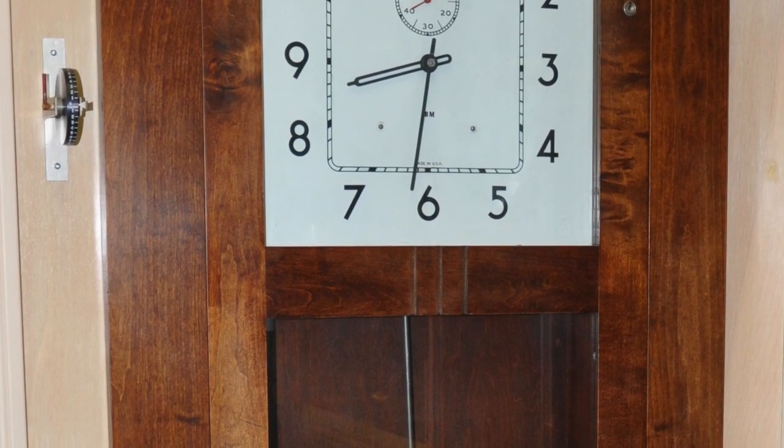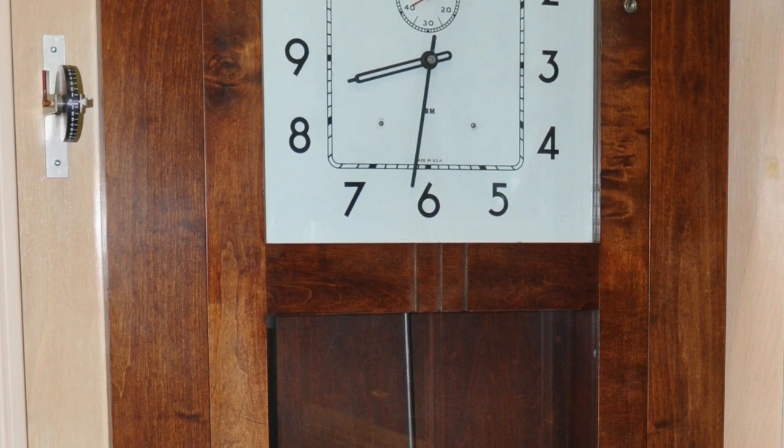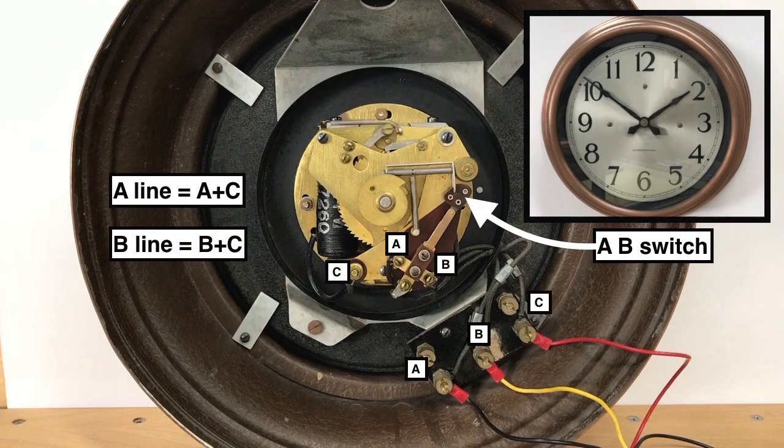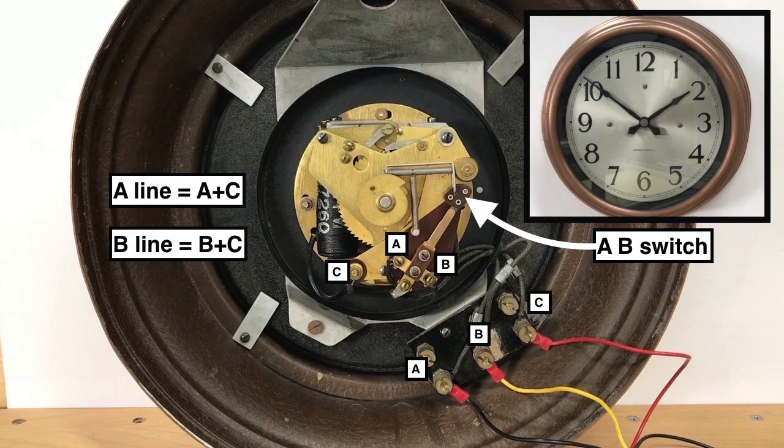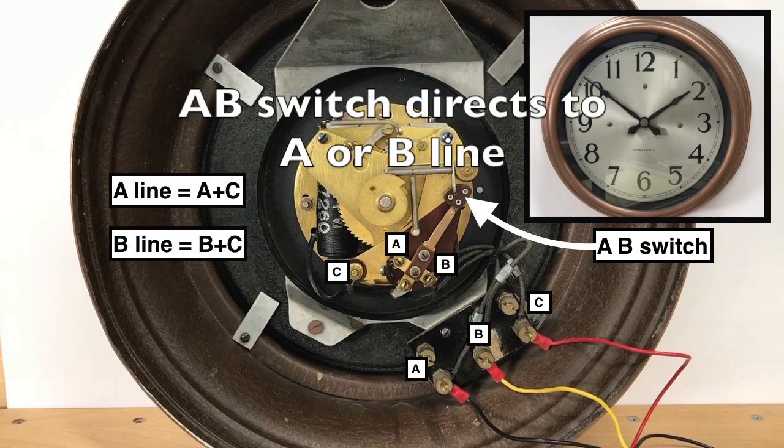The slave clock is not an independent timepiece. Slave hands are simply advanced one minute each time they receive an impulse from the master. This shows the slave wiring. The slave only accepts impulses on one line or the other. The A-B switch directs impulses to the A line or the B line.